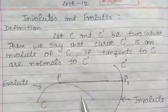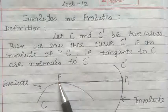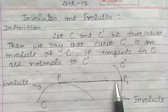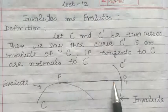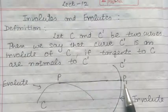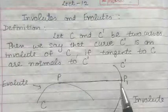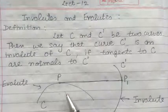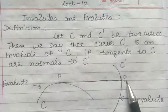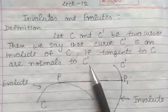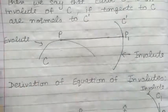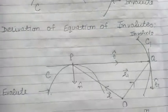Here we have taken the curve C and P, a point on the curve C. We can see that if we draw a tangent at the point P of this curve, then this tangent is a normal for curve C dash at the point P1. Thus, a curve is the involute of another curve C if the tangents to C are normals to the curve C dash.